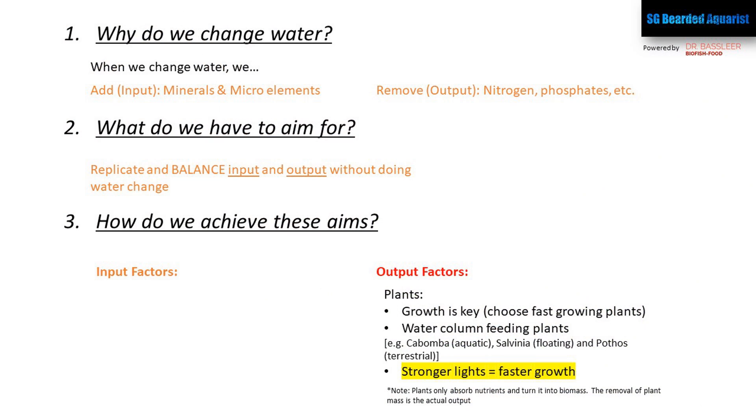The next thing to discuss is lighting. As mentioned, it's not just the biomass of the plants but the growth that matters, and lighting is one of the biggest determinants of plant growth rate. In general, you're going to want a strong set of lights to help plants grow faster. You can go for LEDs or fluorescent tubes — just go for good planted lights. What I'm using here is the EcoTech Radion XR15, and they're doing an amazing job.